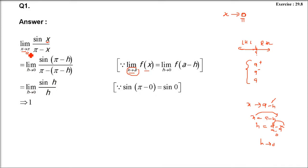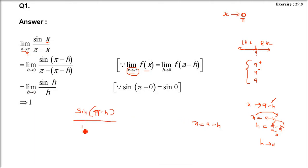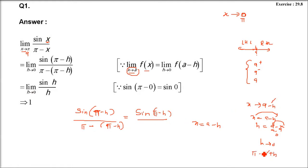So every time, we have x tends to a, where a is π here. We will put x as a minus h. What is a here? Pi. So we will put pi minus h in place of x. Then in the expression, in place of x we substitute pi minus h. So we get: sine(π minus h) divided by [π minus (π minus h)]. π minus π cancels, giving h in the denominator.